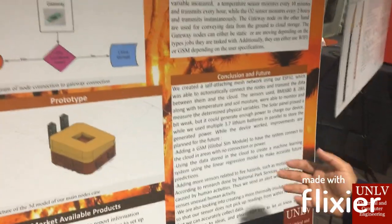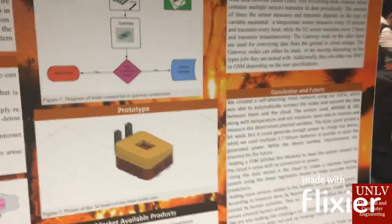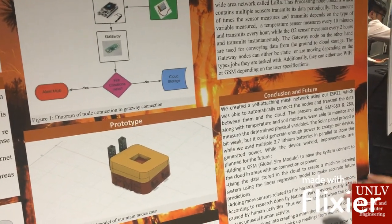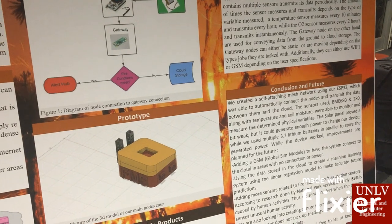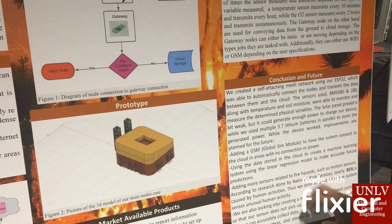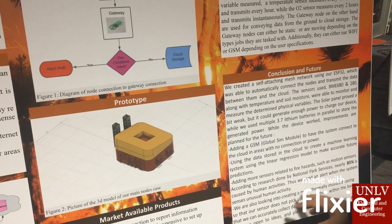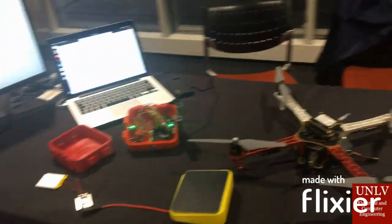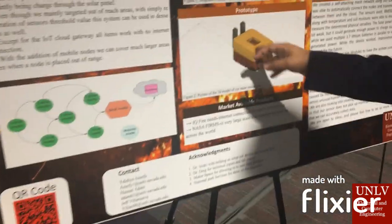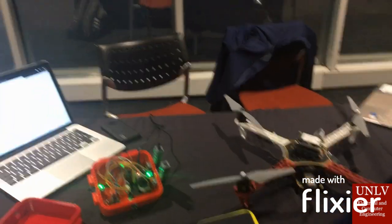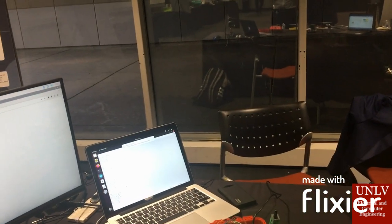For future improvements, we are considering adding a GSM global SIM module, running a machine learning module using the data we collect, and adding motion sensors — since many wildfires are started by human beings, we want to detect human activity. The enclosures are currently 3D printed using Fusion 360, but these boxes are not well-suited for insulation against heat and burning, so we are working on creating a more fire-resistant enclosure.